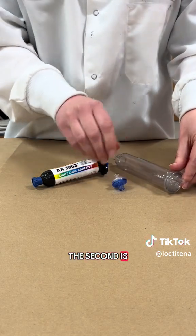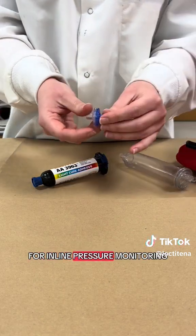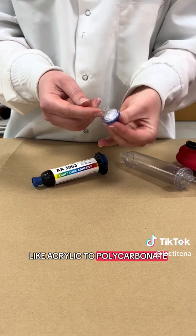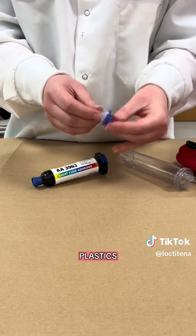The second is a blood transducer for inline pressure monitoring. And this can be made of materials like acrylic to polycarbonate. Again, very rigid plastics.